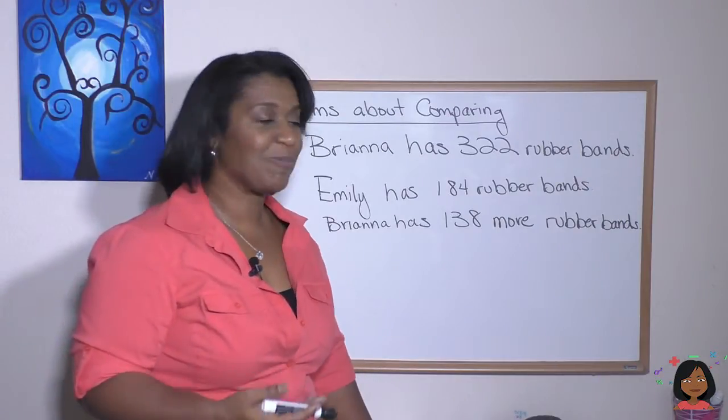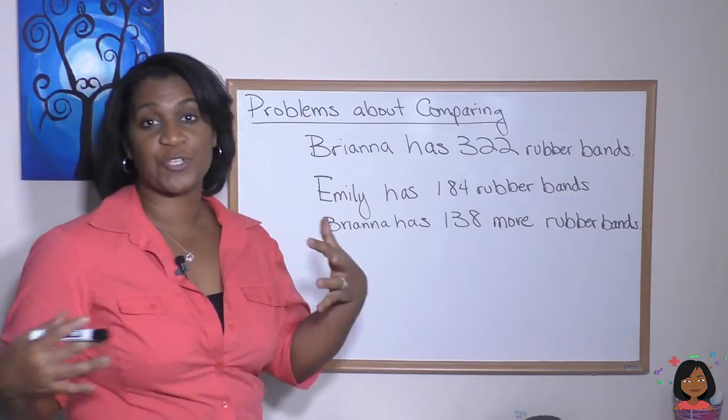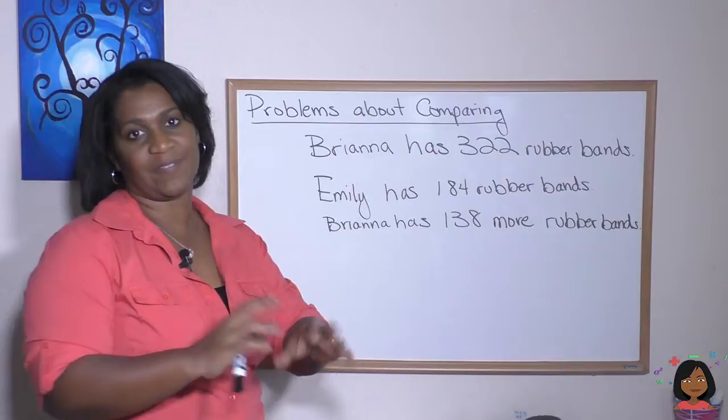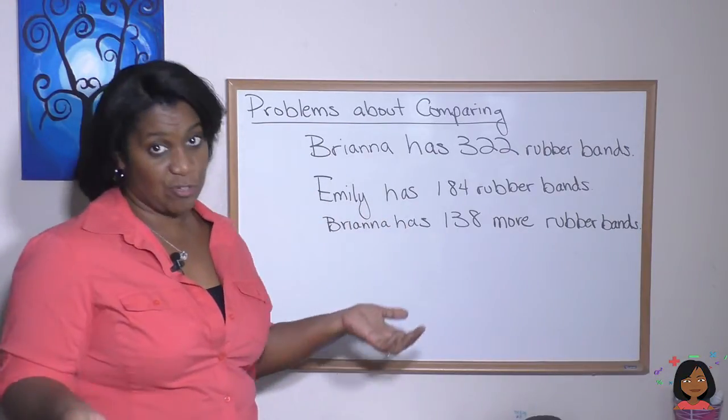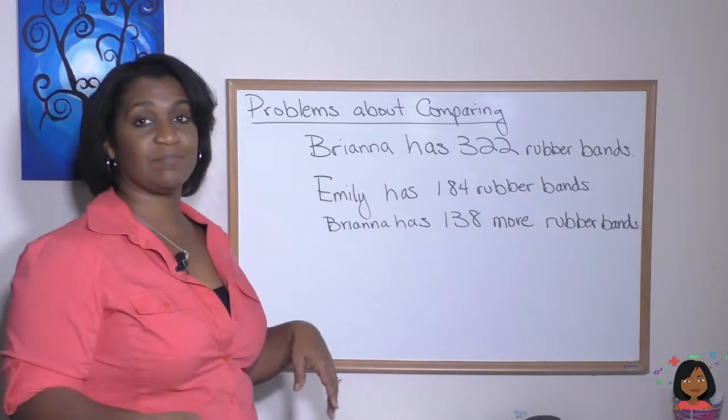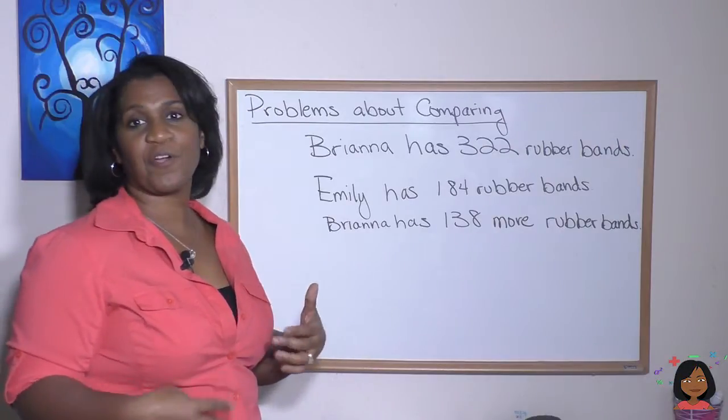Let's take a look at our first problem here. So let's say that our friend Brianna has 322 rubber bands. Remember those small little rubber bands used to make the bracelets out of? Yes, 322, she's got tons of them. Emily has 184 rubber bands. Not bad, but not as much as Brianna. So Brianna has 138 more rubber bands.